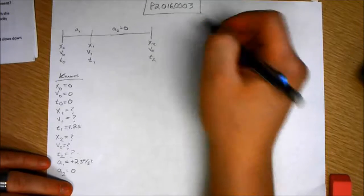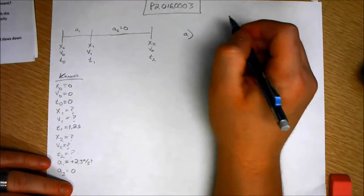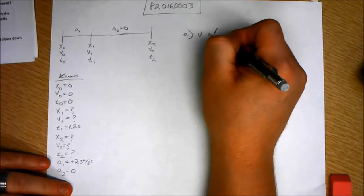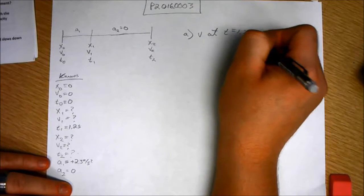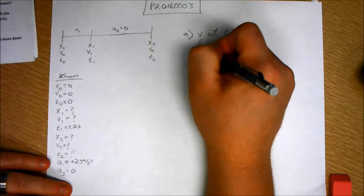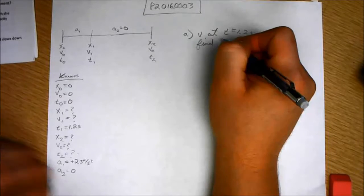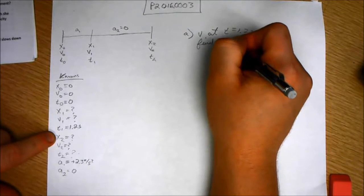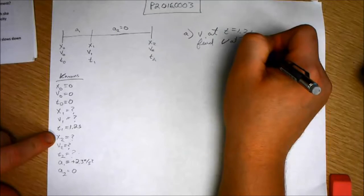But part A says, find velocity at t equals 1.2 seconds. So, in other words, find v at t1.